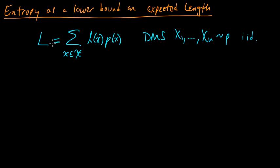We would like to choose a code to minimize this expected codeword length. The key observation is that this only depends on the lengths — p is fixed and we can't control it. So any two codes with the same codeword lengths are equivalent with respect to our objective. The problem of optimizing our code reduces to a problem only involving the set of lengths. Of course, we can't just choose any lengths — they must correspond to a valid uniquely decodable code.